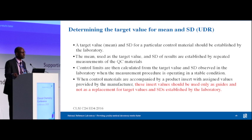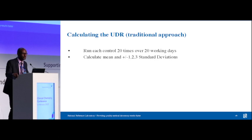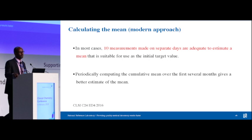The package insert or manufacturer QC values should only be used at the beginning. Once you have enough data, you need to calculate your user-defined ranges. How do we calculate user-defined ranges the way we learned 30 years ago? Run the QC 20 times over 20 days, or two times over 10 days, or four times over five days, and calculate your mean and SD. That's the old way, and most labs are still doing this.